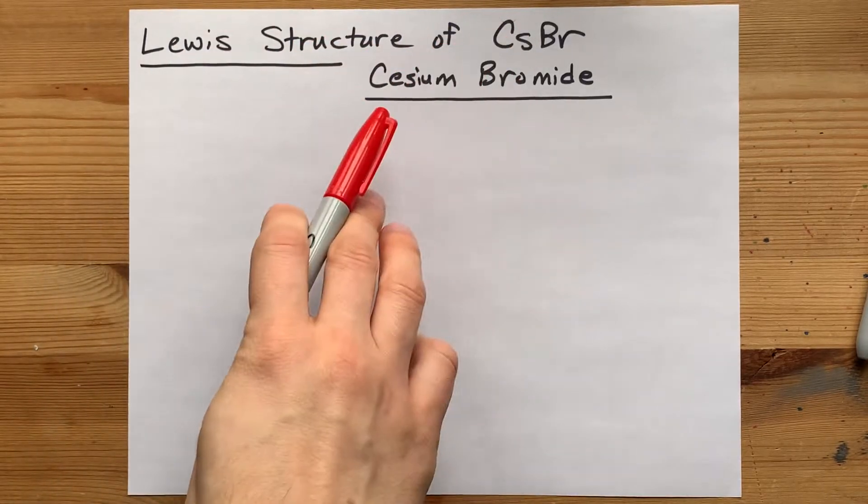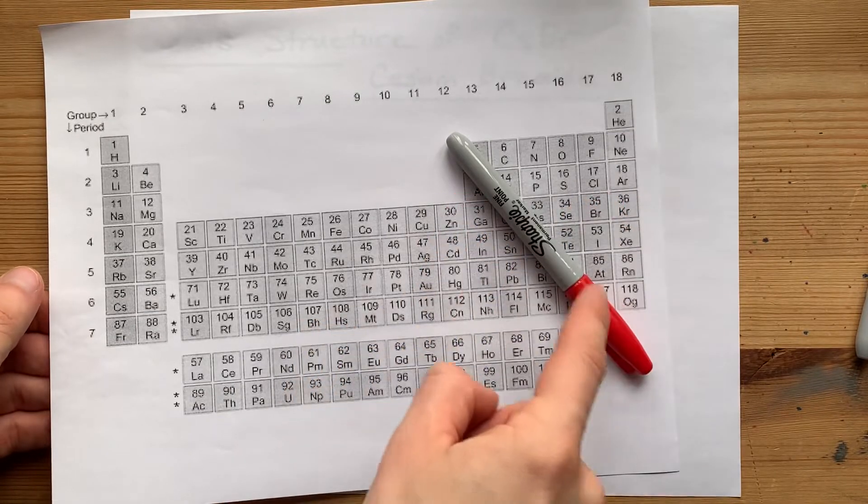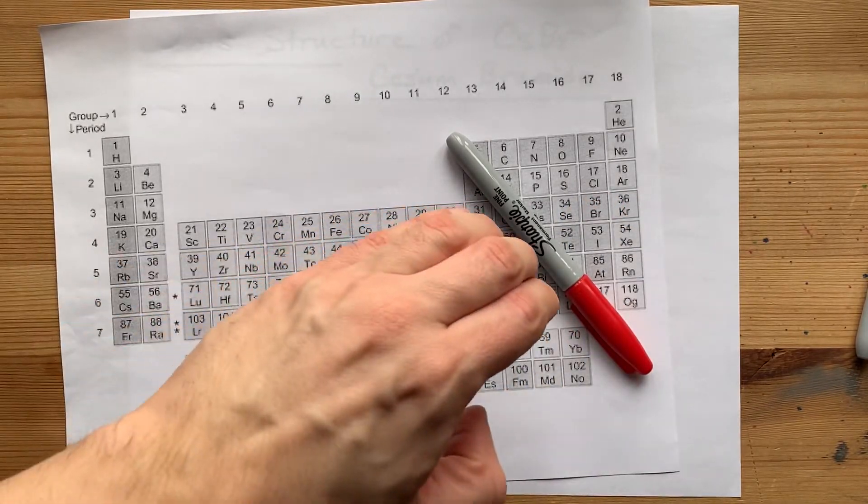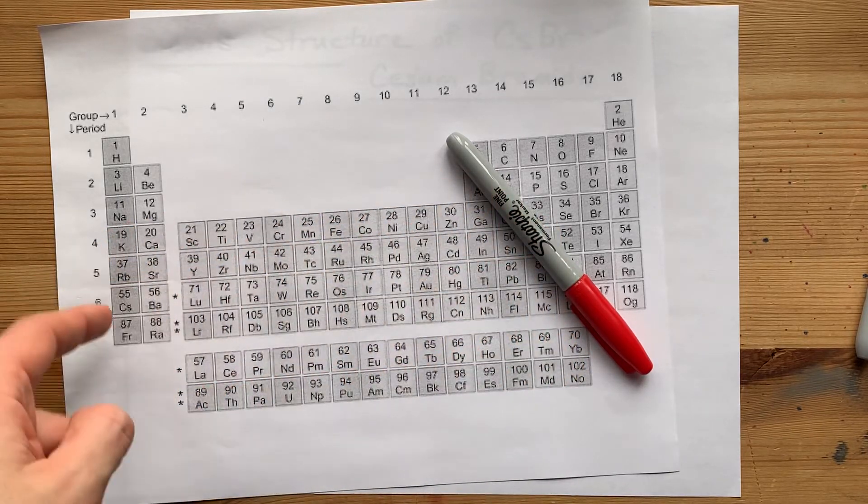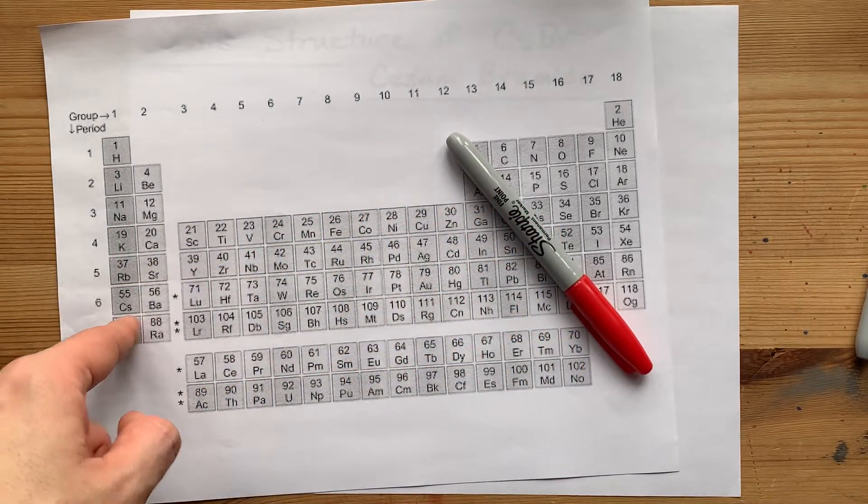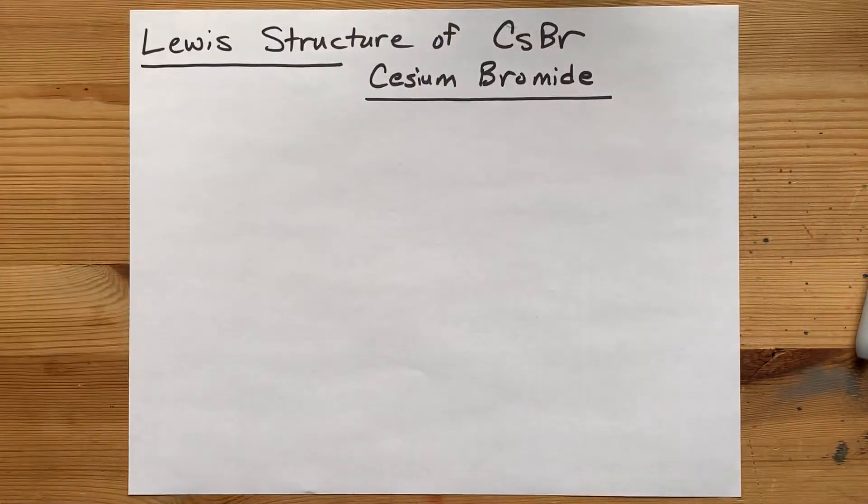Lewis structure of cesium bromide. This is a staircase on the periodic table that separates metals from non-metals. Cesium is a metal because it comes from the left-hand side of the staircase. Bromine is a non-metal. It comes from the right-hand side of the staircase.